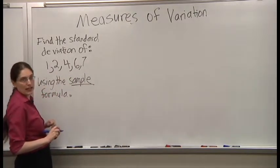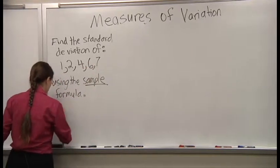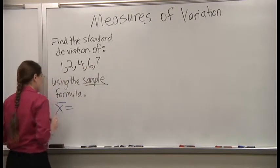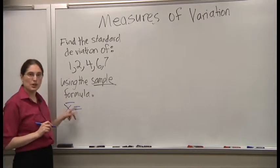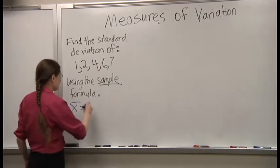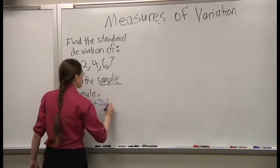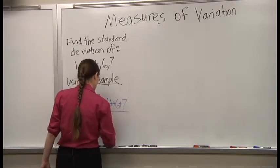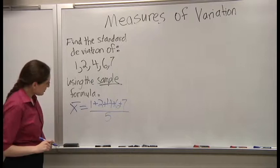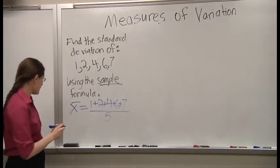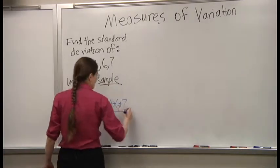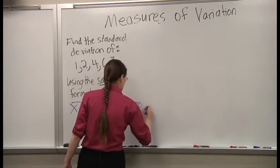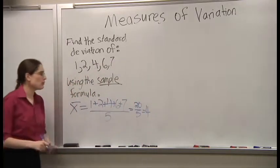What's the first step? Find the mean. Now of course, it's X bar because it's a sample. So that works out to 20 over 5. The mean is 4.